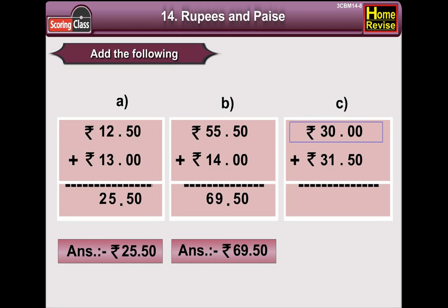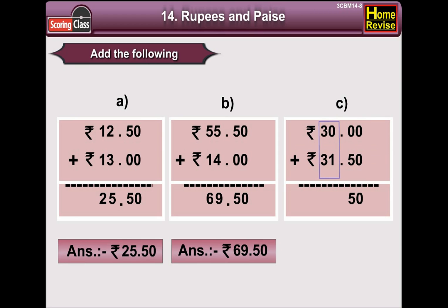C: Rupees 30 plus rupees 31, 50 paisa. In the paisa column, 0 plus 0 is 0, 0 plus 5 is 5. In the rupees column, 0 plus 1 is 1, 3 plus 3 is 6. So the answer is rupees 61, 50 paisa.